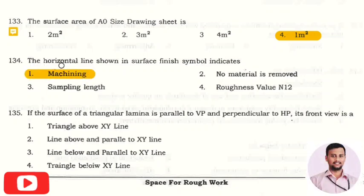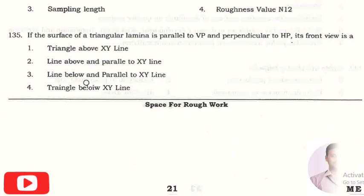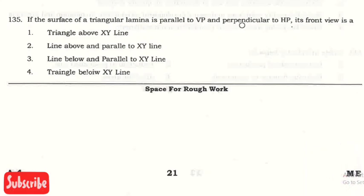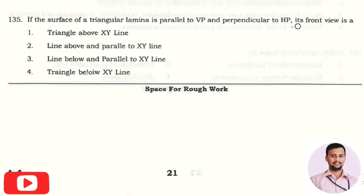So the horizontal line which is shown in a surface finish symbol indicates that it is machining. The next question is: if the surface of a triangular lamina is parallel to VP and perpendicular to HP, its front view is? The right answer is option one, that is triangle above XY line.